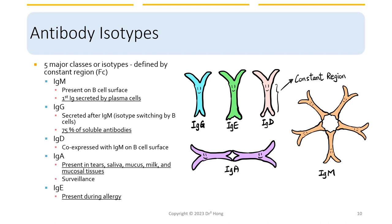IgMs are those presented on the B cell surface. When secreted, IgM is usually the first immunoglobulin secreted by plasma cells, and they can form a pentamer shape, grouping together in number five. IgG is usually the second one secreted after IgM, after a process called isotype switching. IgG constitutes about 75% of the soluble antibodies. IgD can also co-express with IgM on the B cell surface.